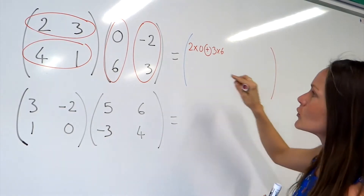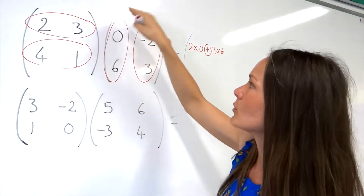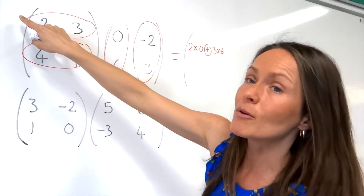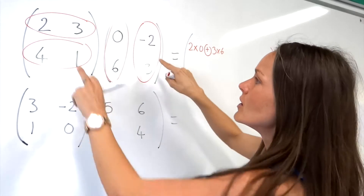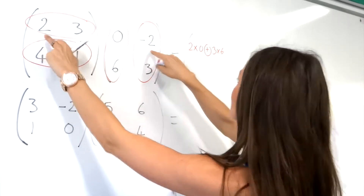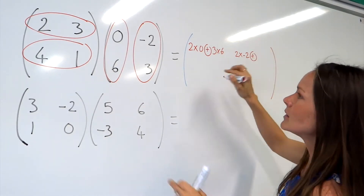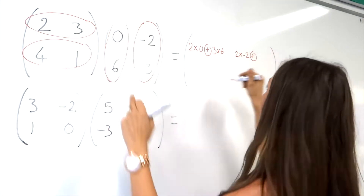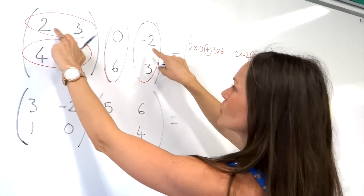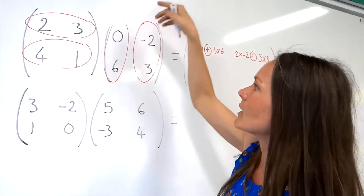For the top right element in our answer, I'm going to use the top row and the right column. I multiply from left to right and from top to bottom. So I'm doing 2 multiplied by minus 2, and then plus 3 multiplied by 3. So you're doing 2 times minus 2 plus 3 times 3, going from left to right, from top to bottom.